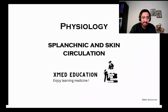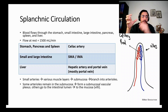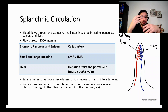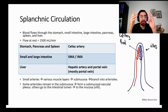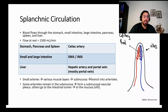In this video I'm going to talk about the physiology of circulation, specifically splanchnic circulation and skin circulation. Splanchnic circulation is the blood that goes to the GI tract — the stomach, small intestine, and large intestine. During rest, when the parasympathetic nervous system is activated, blood flow to the GI tract is about 1500 milliliters per minute. Splanchnic circulation is exactly the opposite of skeletal muscle circulation.